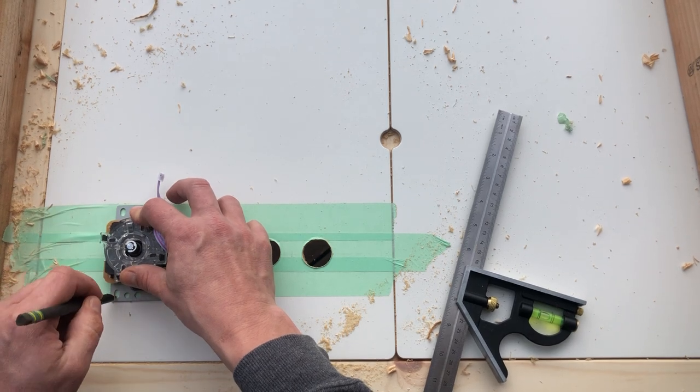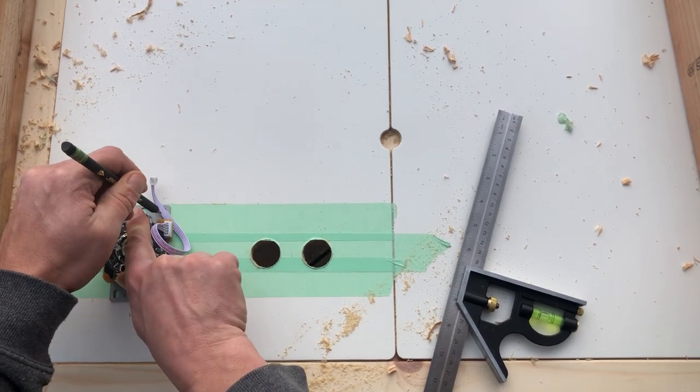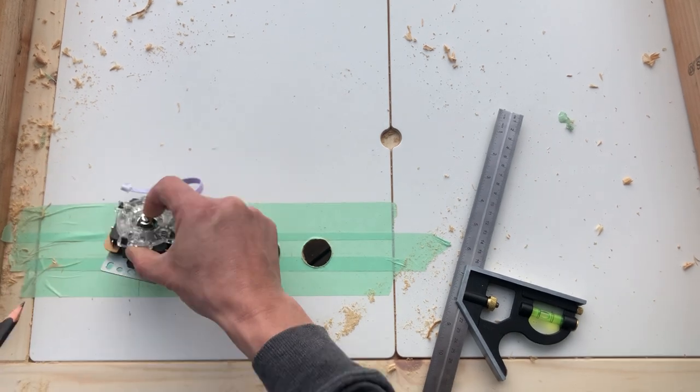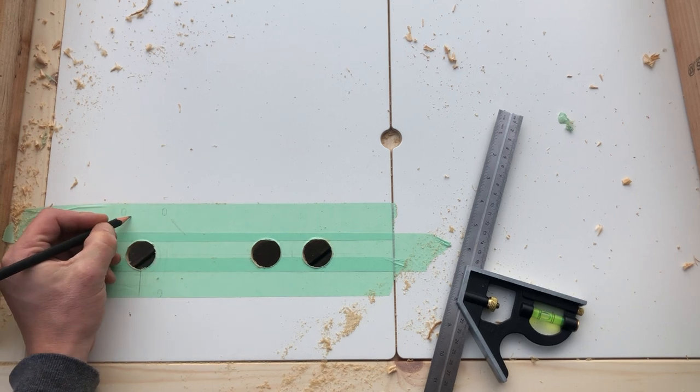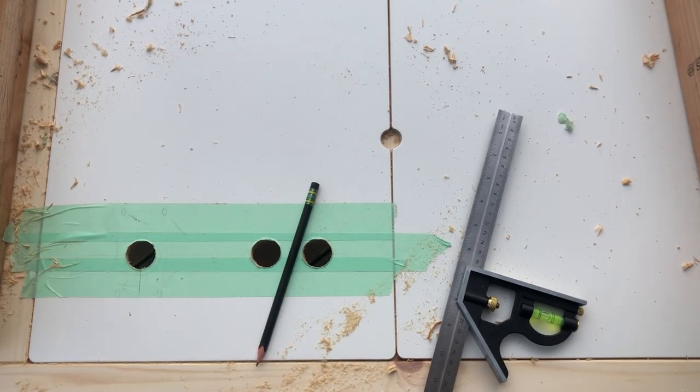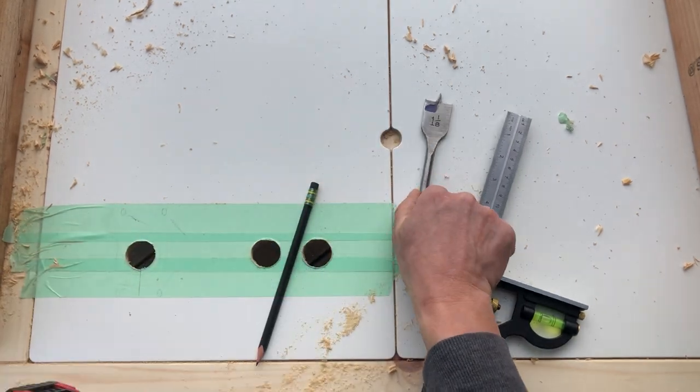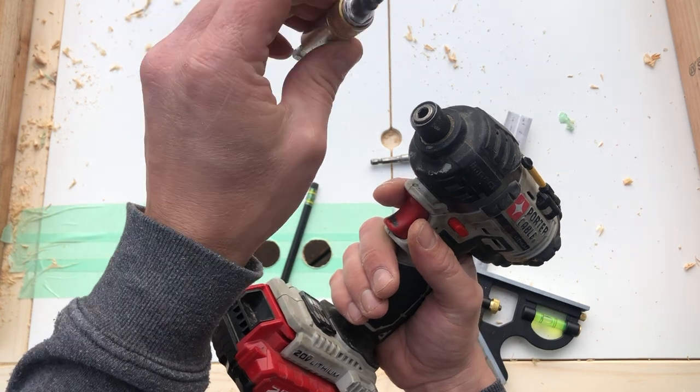Now once you have that, go ahead and mark the various holes in the joystick. You've got four holes here. They're ready to be drilled. Now take your drill back, take out the drill bit, and get the countersink drill. This is great.